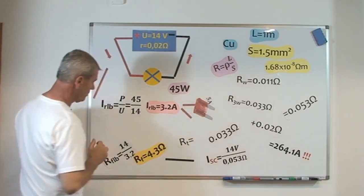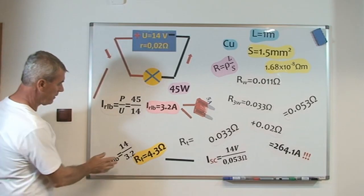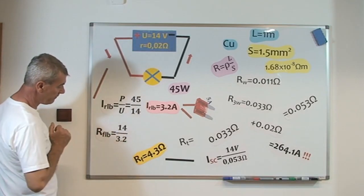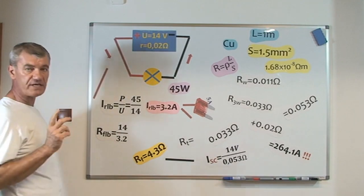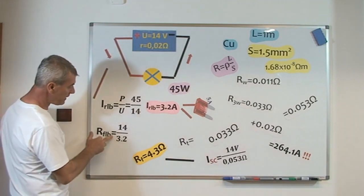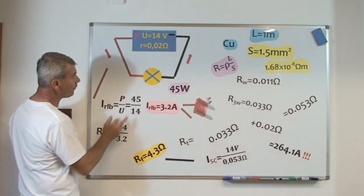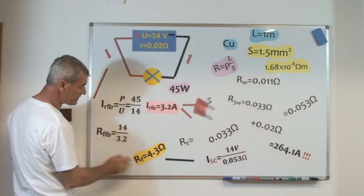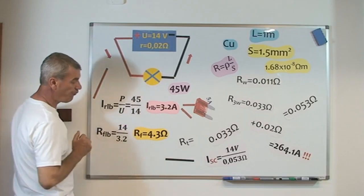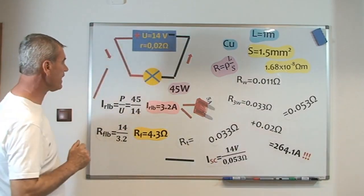The electrical resistance of the filament light bulb, using Ohm's law, equals 14 volts divided by 3.2 amps, equals 4.3 ohms.